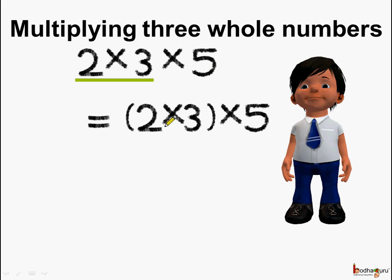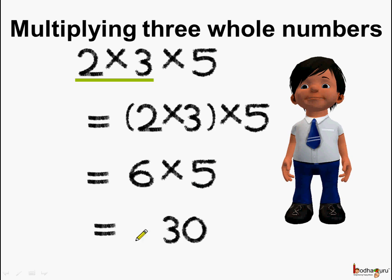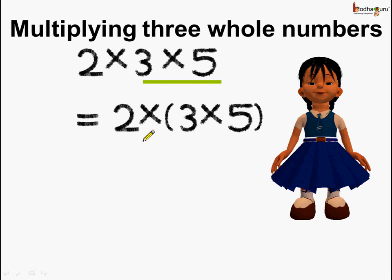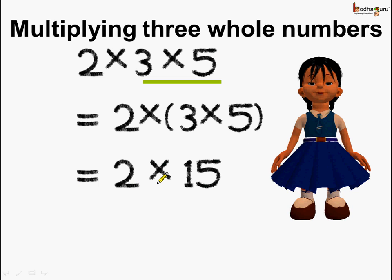So he did (2 × 3) in brackets first, then multiplied by 5. So 2 × 3 is 6, multiplied by 5, and the answer is 30. This is the way Khushi did it — she multiplied 3 and 5 first. So 2 × (3 × 5): 3 × 5 is equal to 15, so it becomes 2 × 15, and the answer is equal to 30. So Khushi also got the answer as 30.